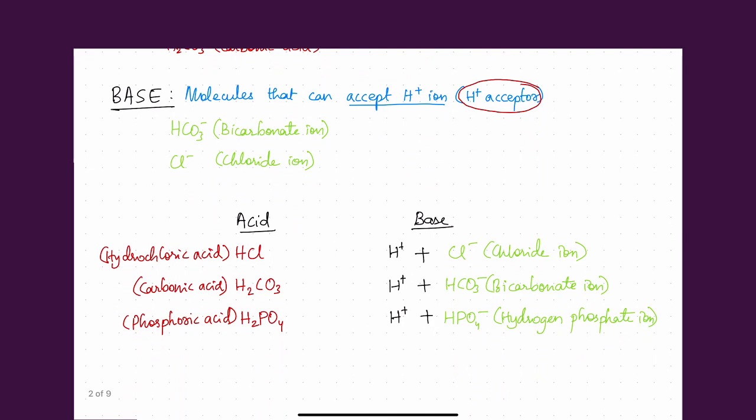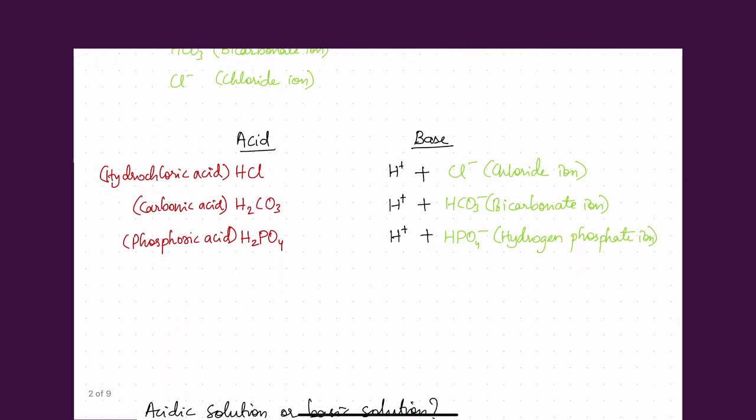Now for examples. Here is hydrochloric acid, HCl. HCl is an acid and releases H+ ions and chloride ions.